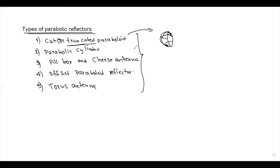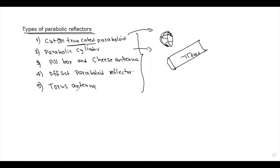The Parabolic Cylinder is in the form of a cylindrical shape. It has a feed point, and the parabolic cylinder is the main key element.